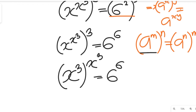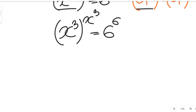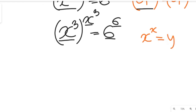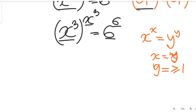Now our equation looks very similar on both sides. You can see we have the same base and the same value in the power. Whenever you have x to the power of x equal to y to the power of y, then x can be equal to y, as long as y is greater than or equal to 1. Equating the other sides, we get x to the power of 3 equal to 6.